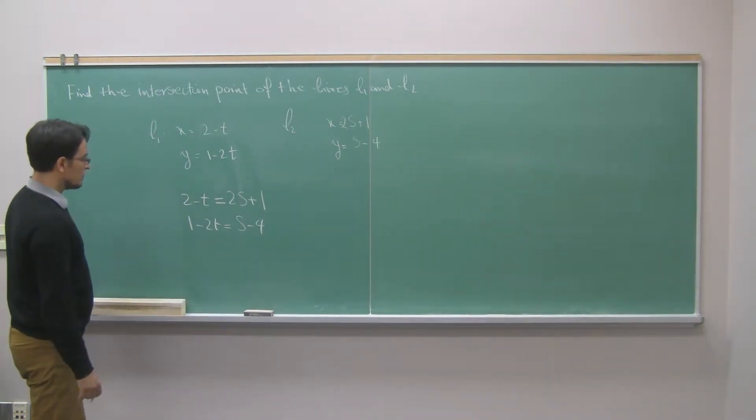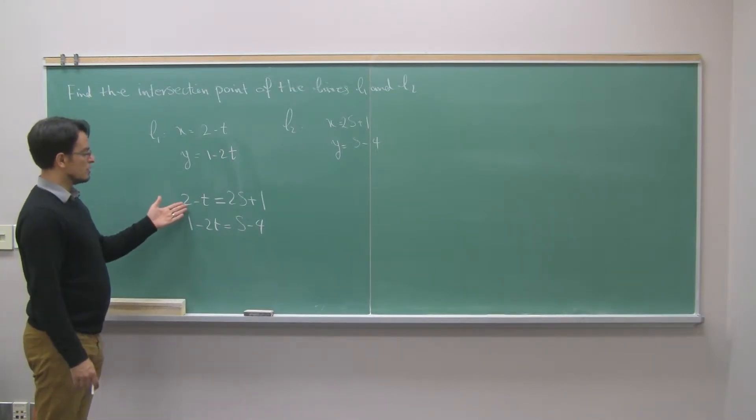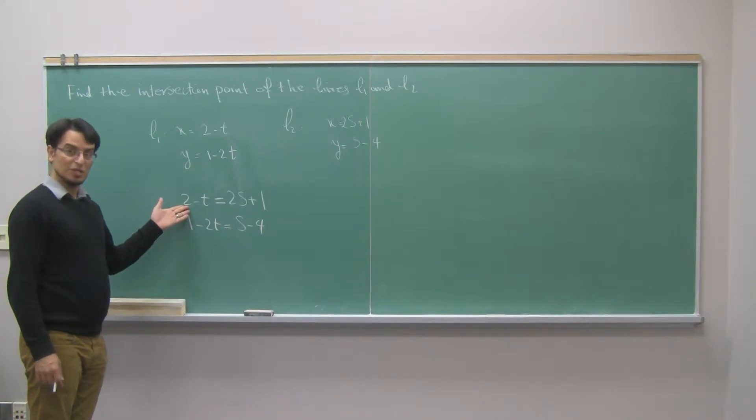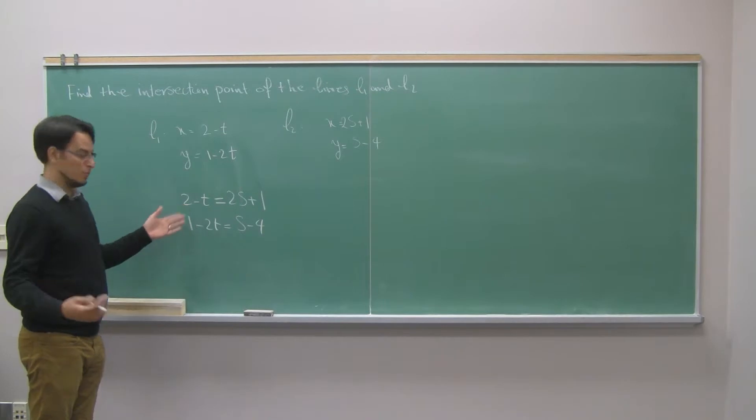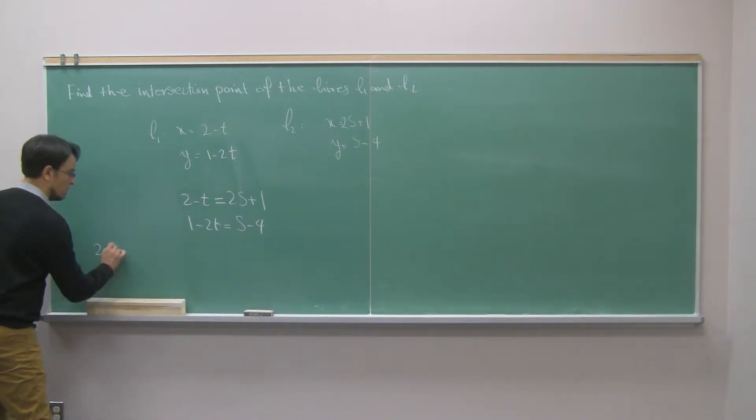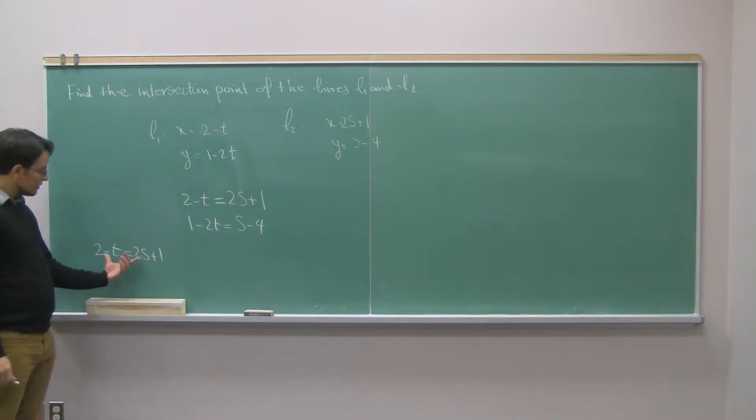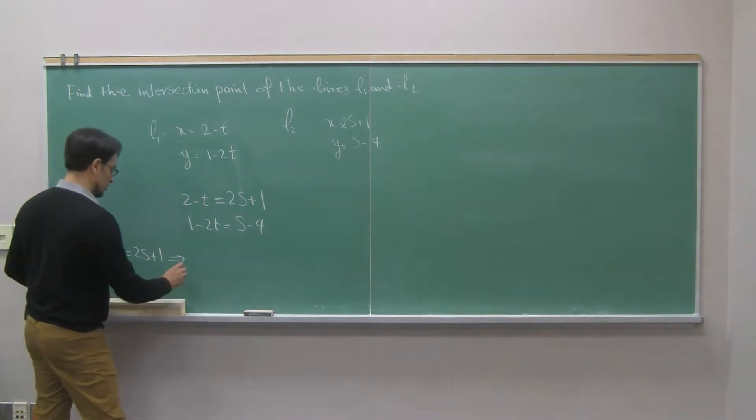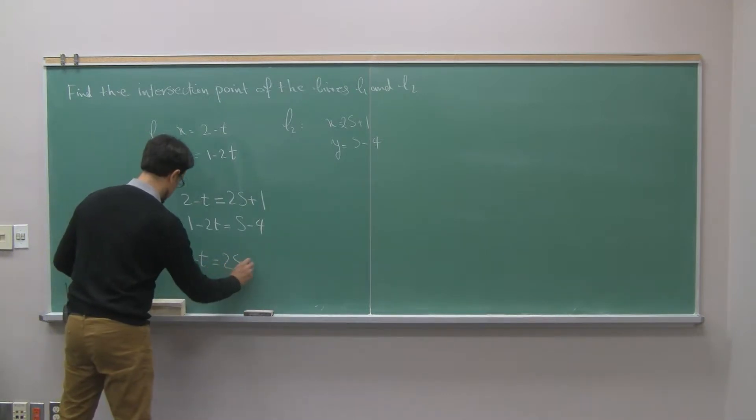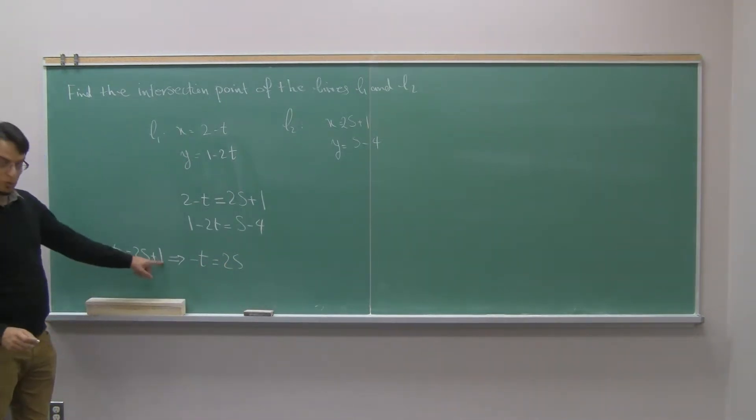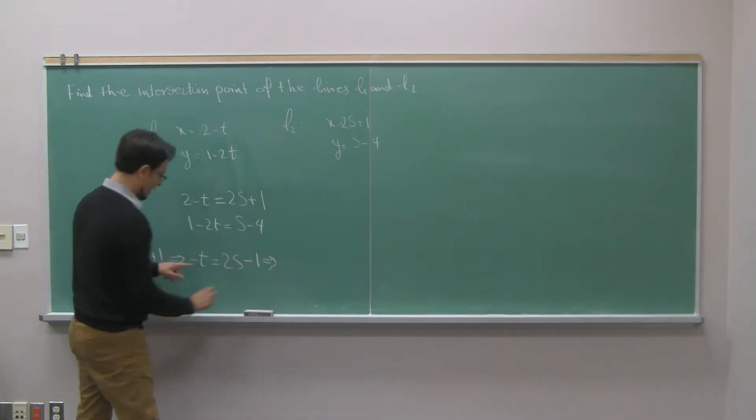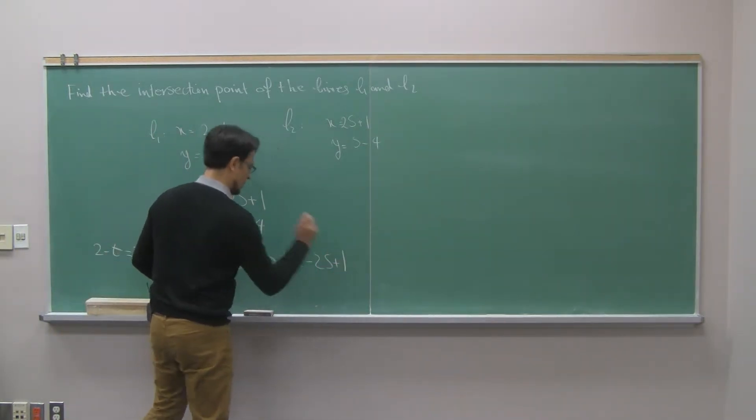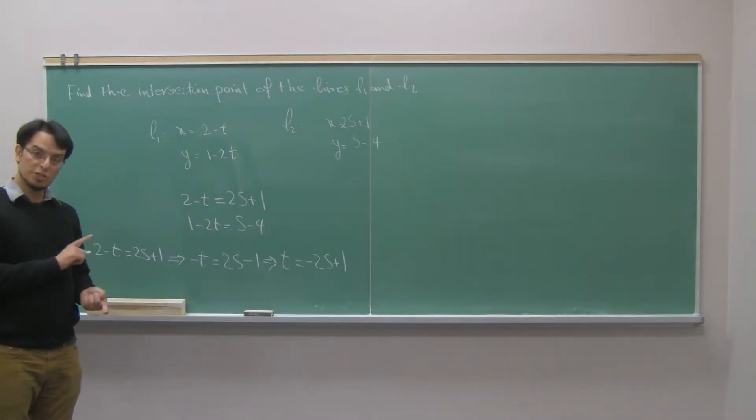Okay, to do so, what I can do is use the first equation and write one of the variables in terms of the other one. So I will use the first one, 2 minus t equals 2s plus 1, and I will try to write t in terms of s. So I take 2 to the other side, so negative t equals 2s plus 1. Taking 2 to the other side, it will be negative 1. Then I divide by the negative sign and get t equals minus 2s plus 1. So I used equation 1 and wrote variable t in terms of s.